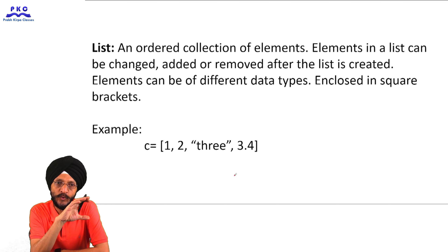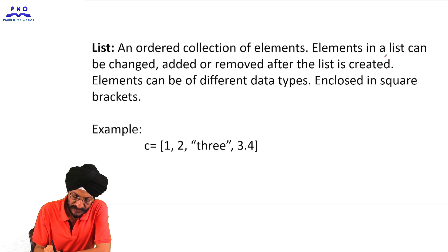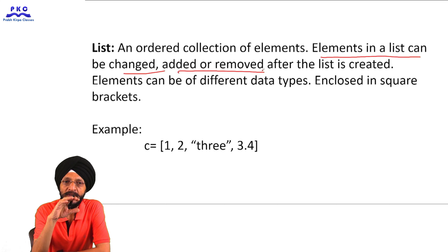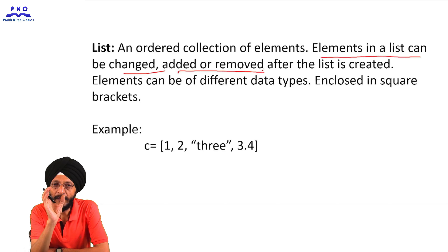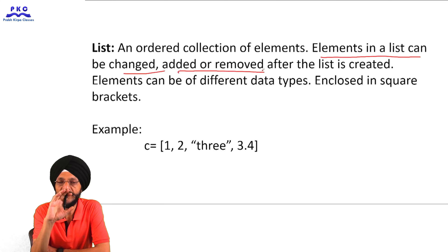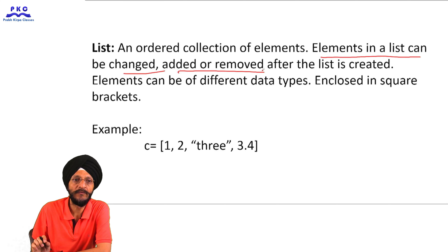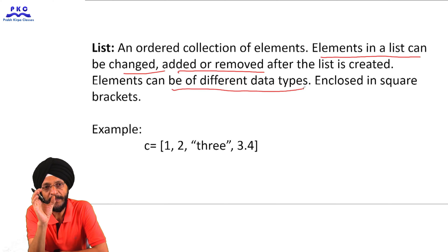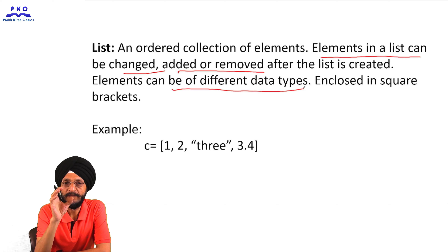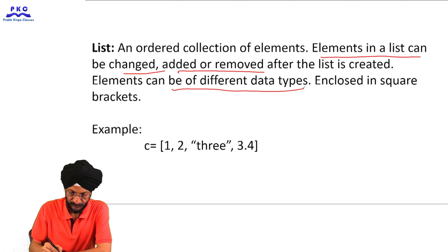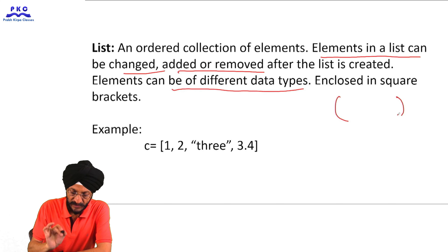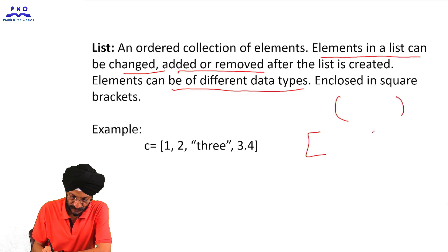Now comes the list. It is also an ordered collection of elements. The difference between list and tuple is that in the case of a list, elements can be changed, added, or removed after the list is created. In case of a tuple, once created, we cannot change, add, or remove elements. Elements in a list can be of different data types — the same is true for tuples. In case of tuples, elements are enclosed in parentheses, but in case of lists, elements are enclosed in square brackets.